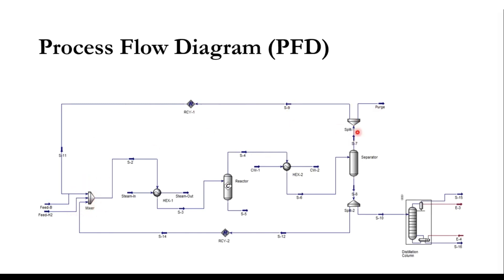The vapor stream S7 is split into two parts: a purge stream and a recycle stream, with the majority recycled back. Similarly, the liquid stream S8 is split — part is recycled while the majority goes to the distillation column. Cyclohexane is obtained from the bottom of this column. We will simulate this entire process in Aspen HYSYS including both recycle systems.